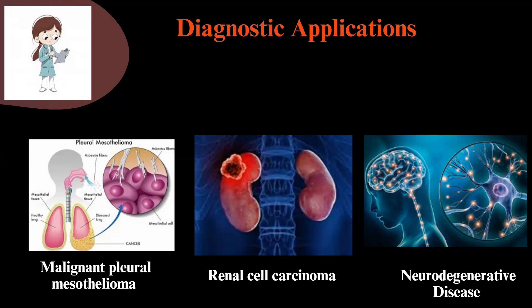In renal cell carcinoma, altered glutathione peroxidase expression is observed in renal cell carcinoma tissue and serum, with elevated levels correlated with tumor progression and poor prognosis. In neurodegenerative diseases, including Alzheimer's and Parkinson's disease: in Alzheimer's, decreased glutathione levels and an increased oxidized glutathione to glutathione ratio correlate with disease progression. In Parkinson's disease, low glutathione levels and impaired glutathione synthesis are associated with dopaminergic neuronal loss.